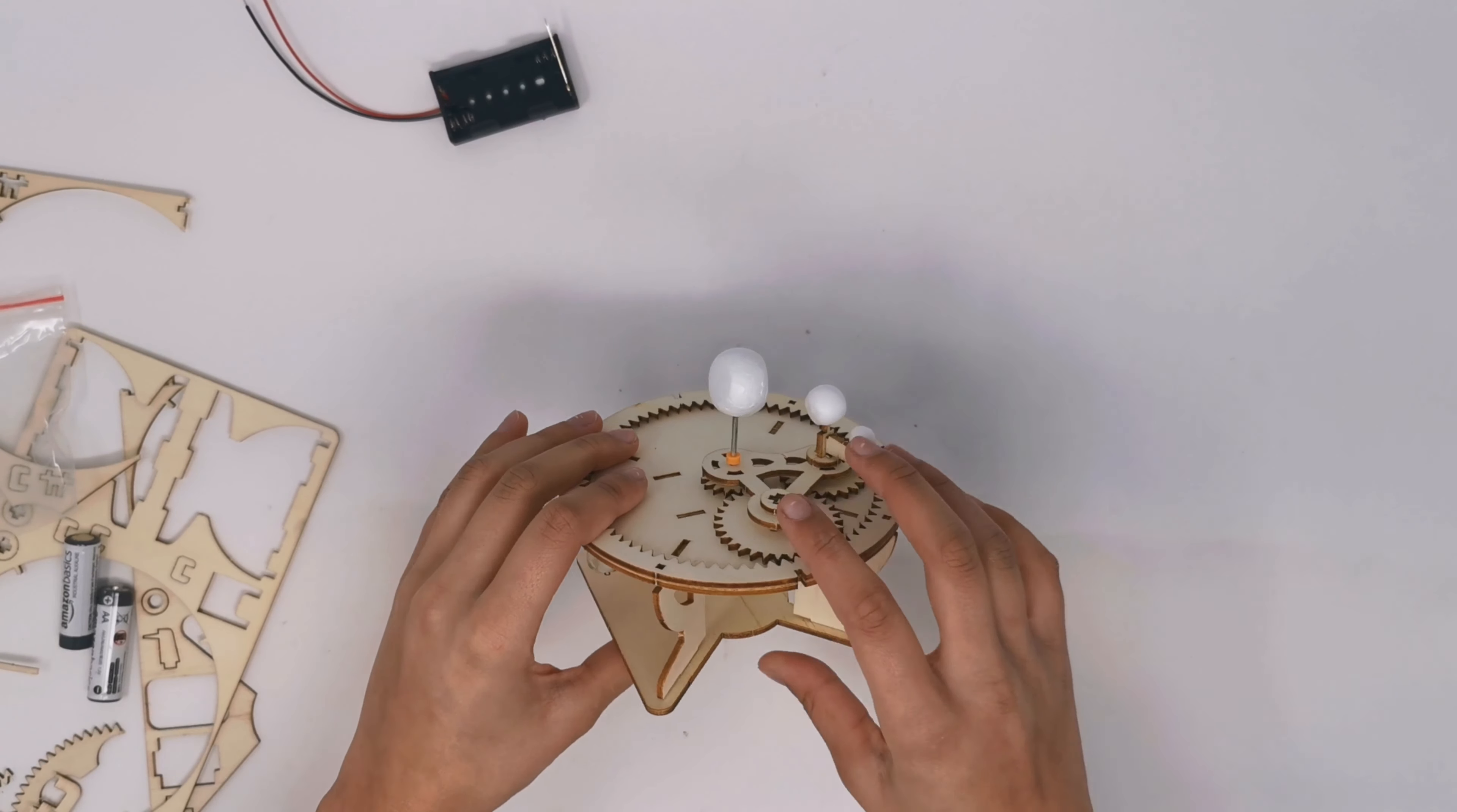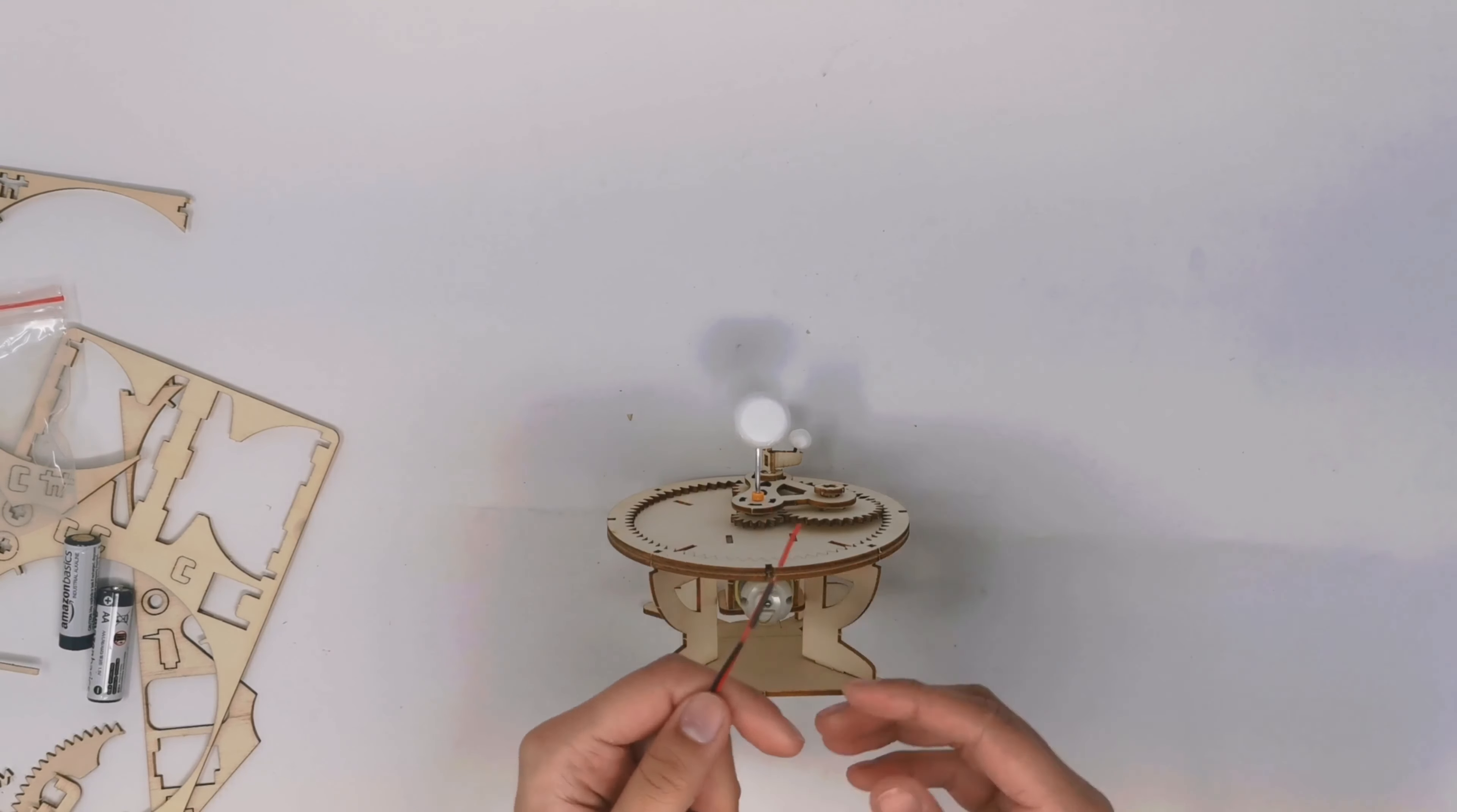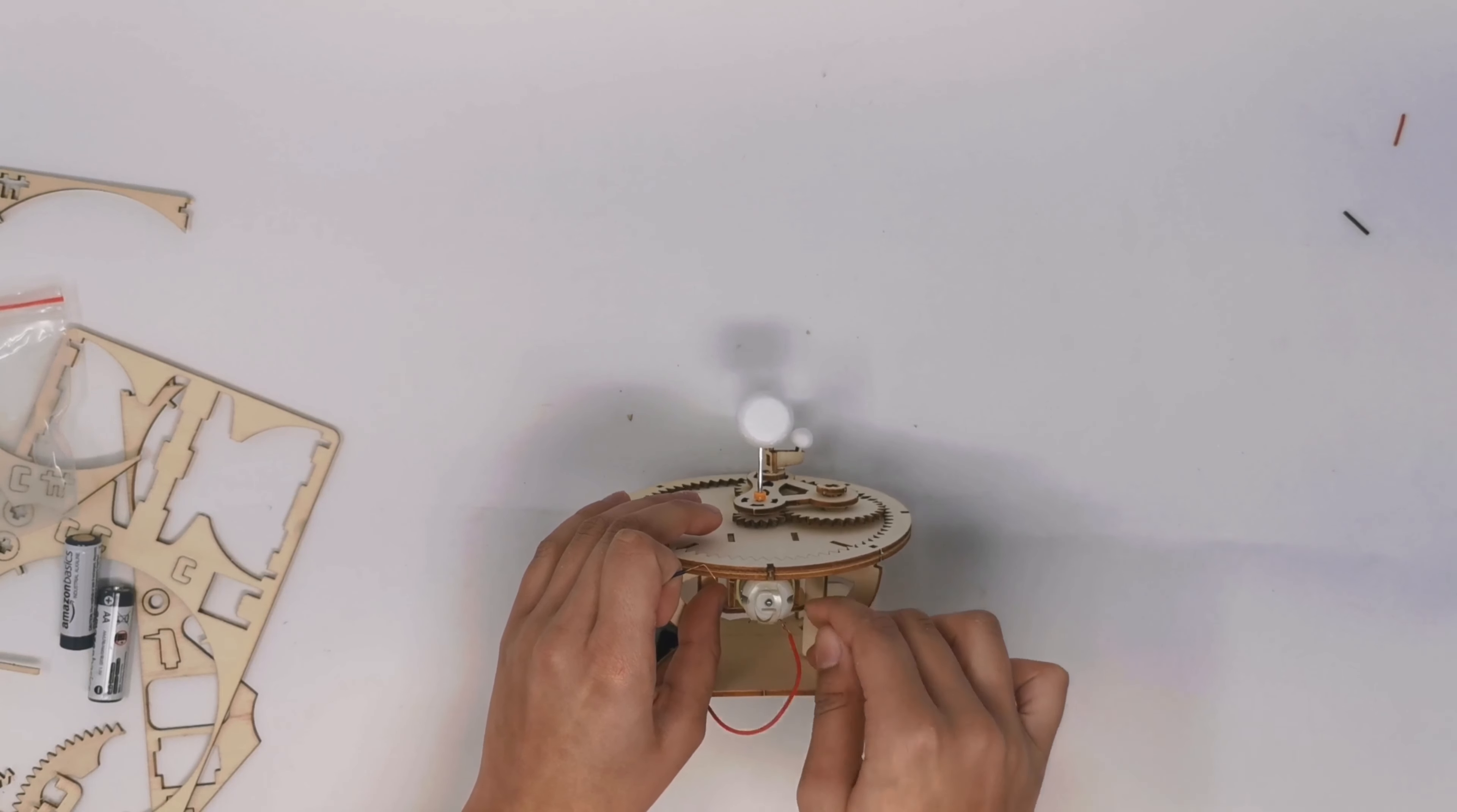Here is a 360 view of what your solar system should look like so far. Now, time for the wiring. Grab your battery pack and twist off each end. Then, wire them to the prongs on the motor as shown. For this part, you want to make sure that you twist your wires in place so that they do not come undone.